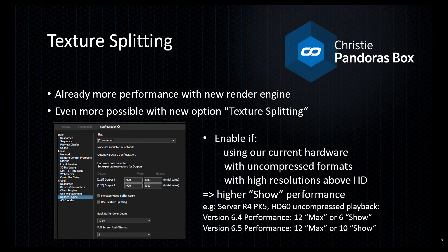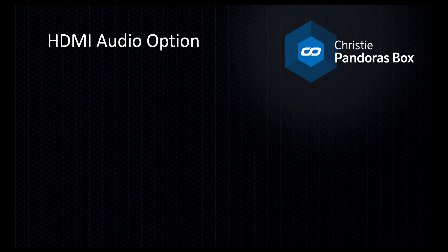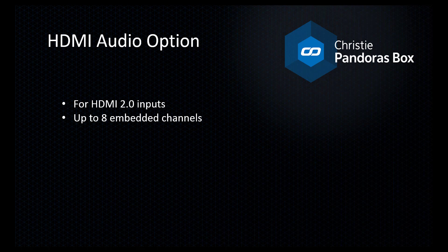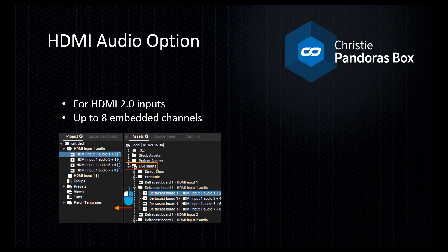Let's have a look at the last feature — the HDMI audio option. After introducing the HDMI 2.0 input cards, we have now upgraded the feature set to allow the use of all embedded audio channels that come with the HDMI signal. With this version you can assign up to 8 embedded channels to ASIO tracks, which allow fully synchronized playback of audio and video — just keep in mind that the video part must be loaded too, otherwise we cannot de-embed the audio. In Pandora's box, when you are in the assets tab, open the live inputs folder as usual, and next to the video part you now also see the audio part with those 8 channels. Simply drag them into your project and assign them to an ASIO track.